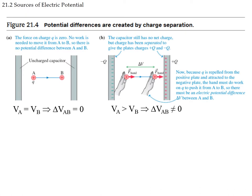Now consider uncharged capacitor plates with a positive charge going from point A to point B. Since there is no electric field between the plates, there will be no work done in going from A to B. Therefore the potential at A equals the potential at B, and the change in electric potential is zero.